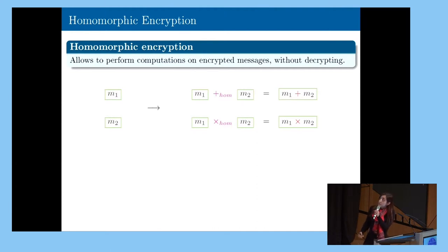What we would like to do is to add those two ciphertexts homomorphically or multiply them homomorphically, and we would like to retrieve, as a result, the sum of ciphertexts encrypting the addition of the original messages or their multiplication.